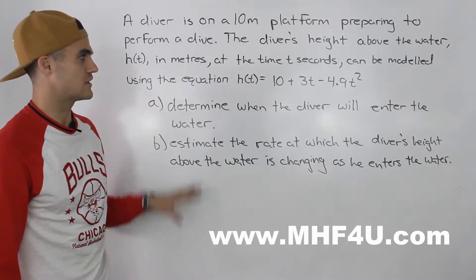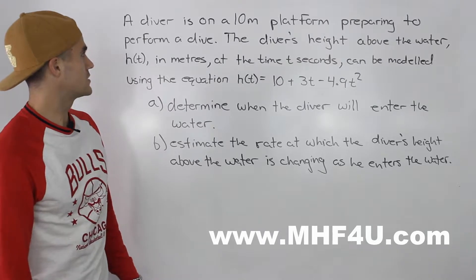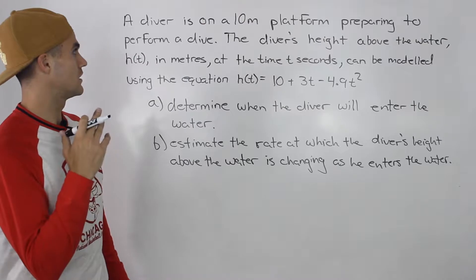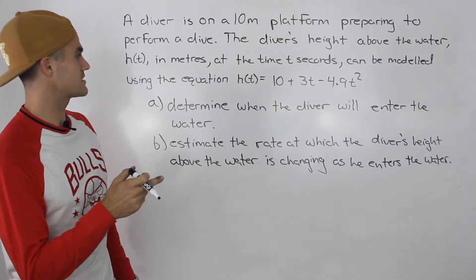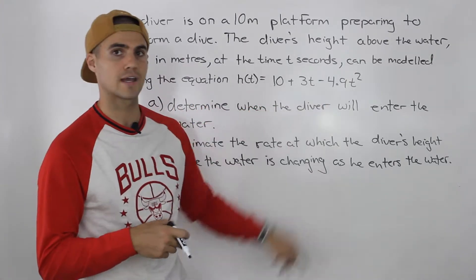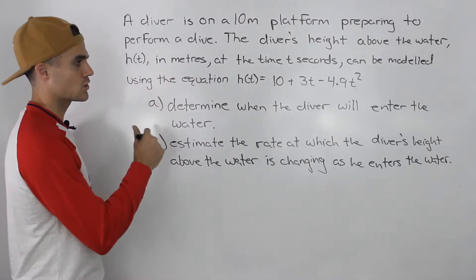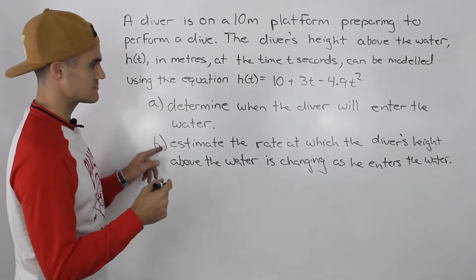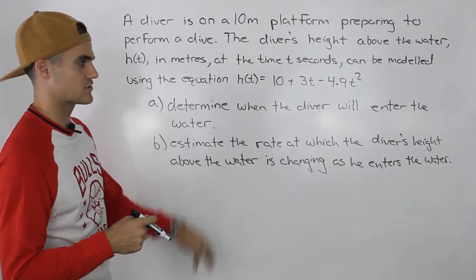Welcome back everybody. Moving on to the last question on the test — we finally reached the end. We have a diver on a 10 meter platform preparing to perform a dive. The diver's height above the water h(t) in meters at time t seconds can be modeled using the equation h(t) = 10 + 3t − 4.9t². There are two parts to this question: part a, determine when the diver will enter the water, and part b, estimate the rate at which the diver's height above the water is changing as he enters the water.